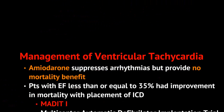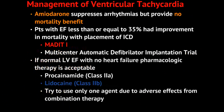In terms of antiarrhythmics, we commonly use medications such as amiodarone, which generally does a very good job of suppressing arrhythmias like ventricular tachycardia. But note, amiodarone has no mortality benefit. The MADIT-1 trial — the Multicenter Automatic Defibrillator Implantation Trial — showed that patients with an EF less than or equal to 35% had improvement in mortality when an ICD was placed. If a patient has a normal EF with no symptoms or signs of heart failure, pharmacological therapy is generally acceptable.